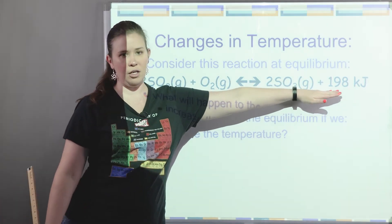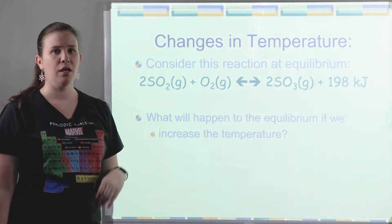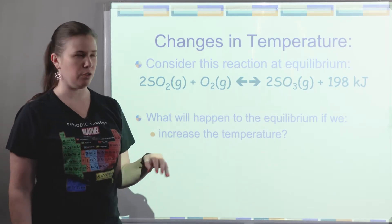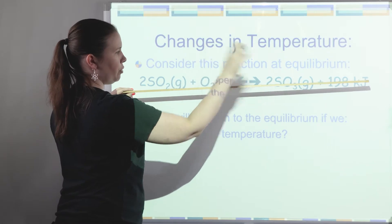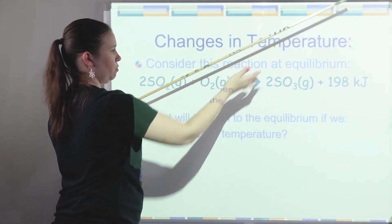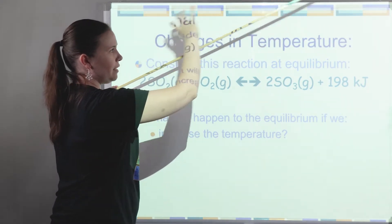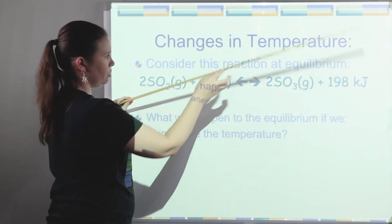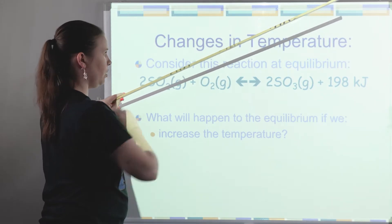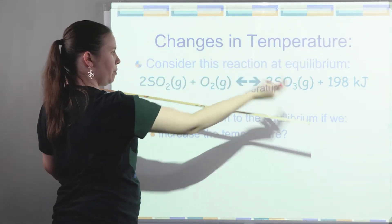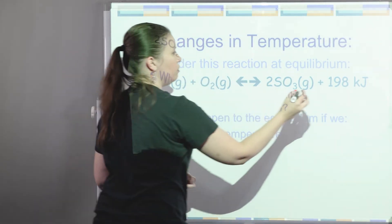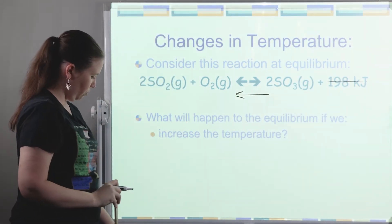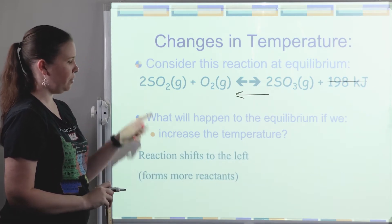Here we have a reaction with energy on the product side — an exothermic reaction, meaning it's producing energy. What would happen if we increase the temperature? If I'm at equilibrium and heat is on the product side, an increase in temperature would mimic increasing the concentration of products. To use up those extra products, I need the reverse reaction. So increasing temperature for this exothermic reaction means the reaction shifts to the left, favoring the reactants.